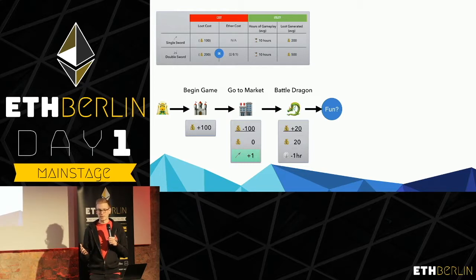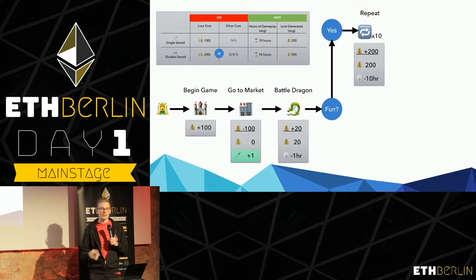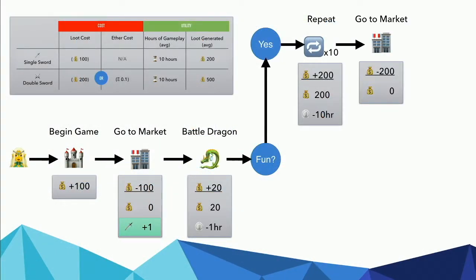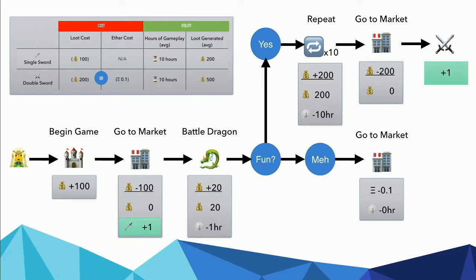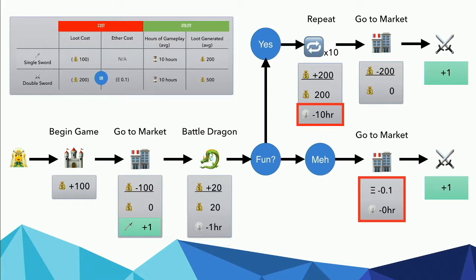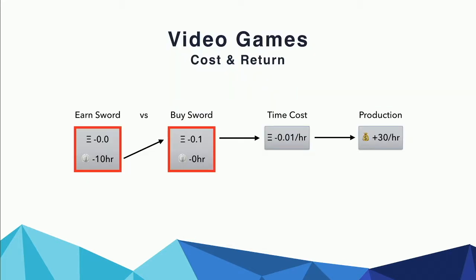At this point, they have a decision to make. If it's fun, they'll keep playing and do this for 10 more hours until they earn 200 loot, then go to a market to buy their double sword. If they think it's just okay and want to augment their experience, they can speed up the process — just go to the market, buy that double sword for 200 loot or .1 ETH. Looking at both scenarios, the costs are either spending 10 hours of time earning the sword, or paying .1 ETH to just buy it. We can see there is a time cost — the player who purchases the double sword directly would value their time at least .01 ETH per hour, hoping to return an increase of 30 loot per hour to their production.